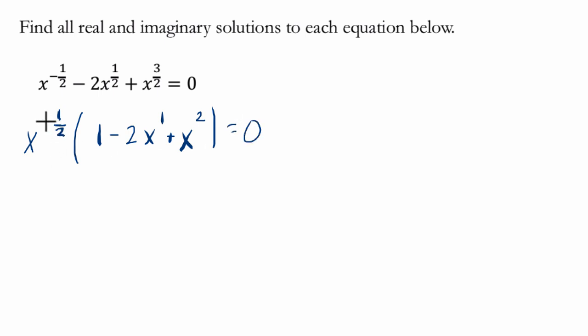And all I'm saying here is this works out because x to the negative one half times x squared. Well, if you take one half away from two, you are left with one and a half, which is three halves.